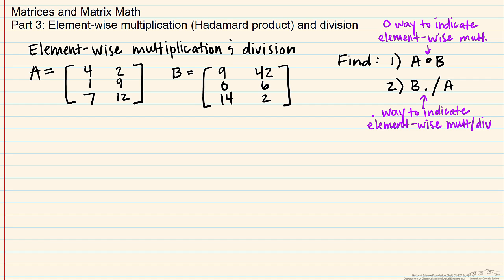So I also have two problems set up here as well: A times B and B divided by A. And remember, this is element-wise. So you're not multiplying one whole matrix with another whole matrix. You're multiplying the elements in one matrix by the elements in another. So here, you multiply the first element of each together and get the number 36. And then the second two elements and get 84. And so on and so forth.